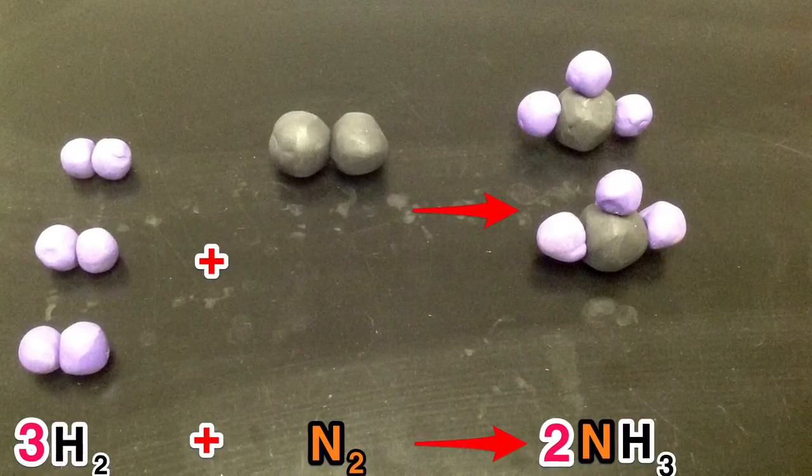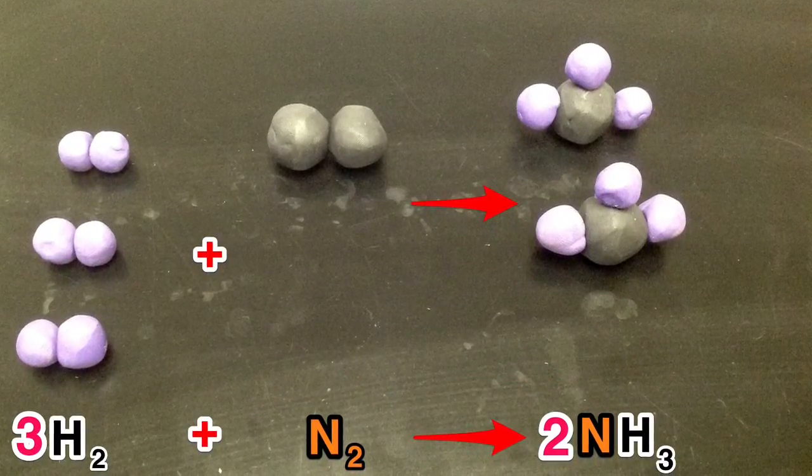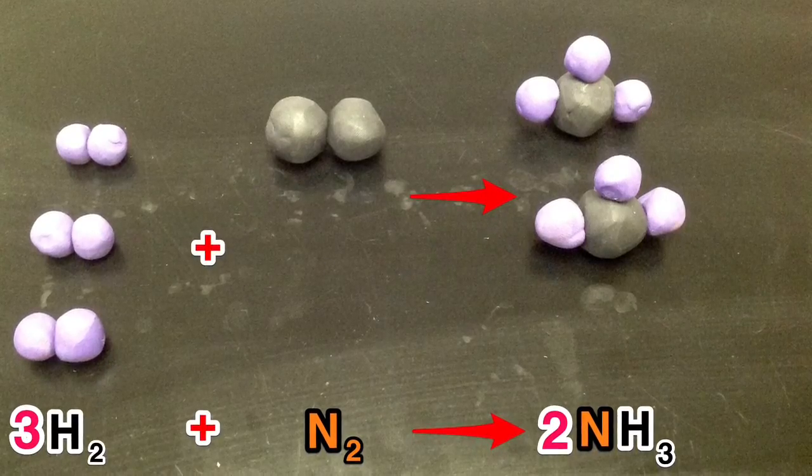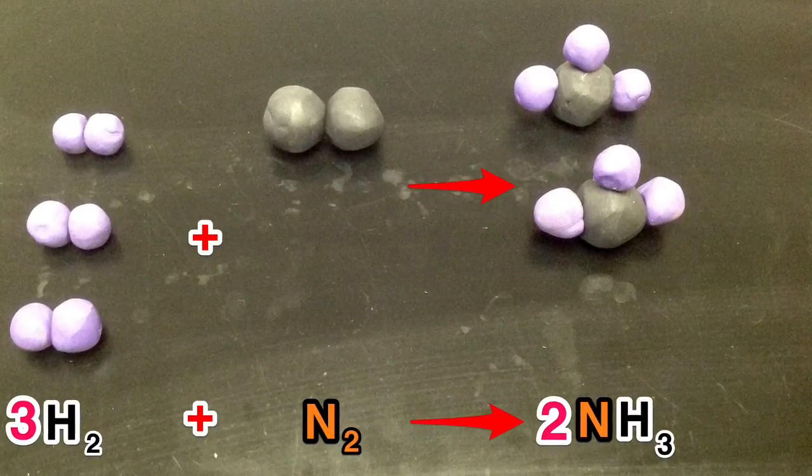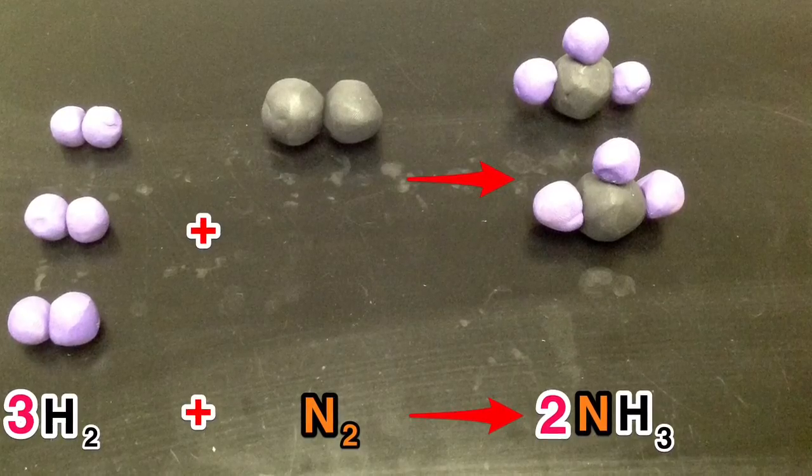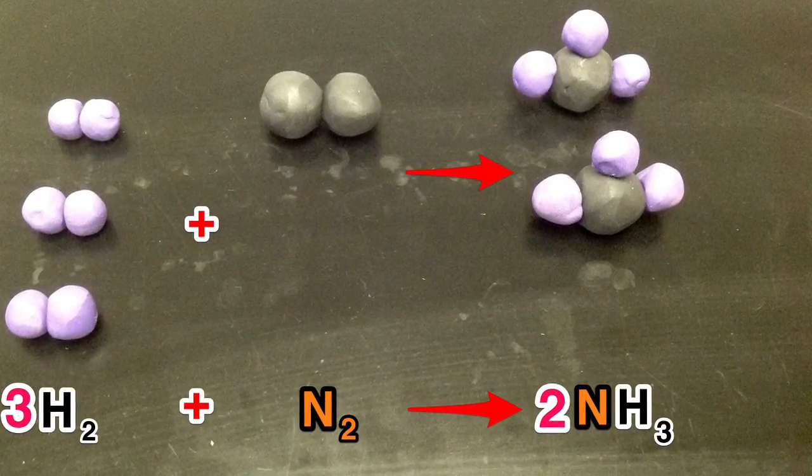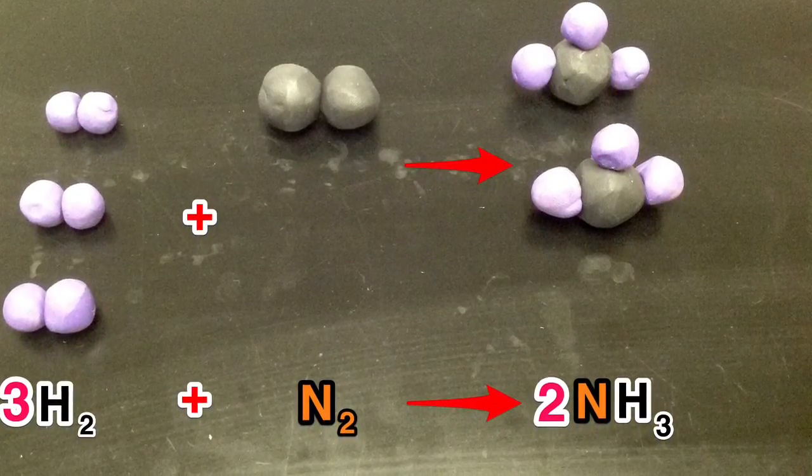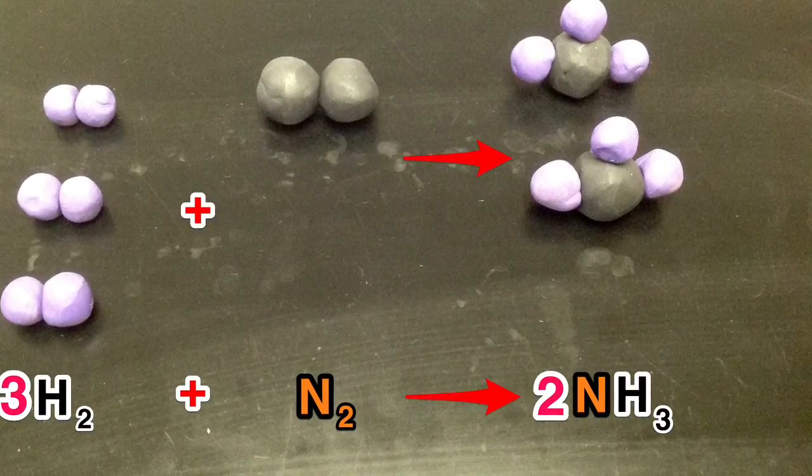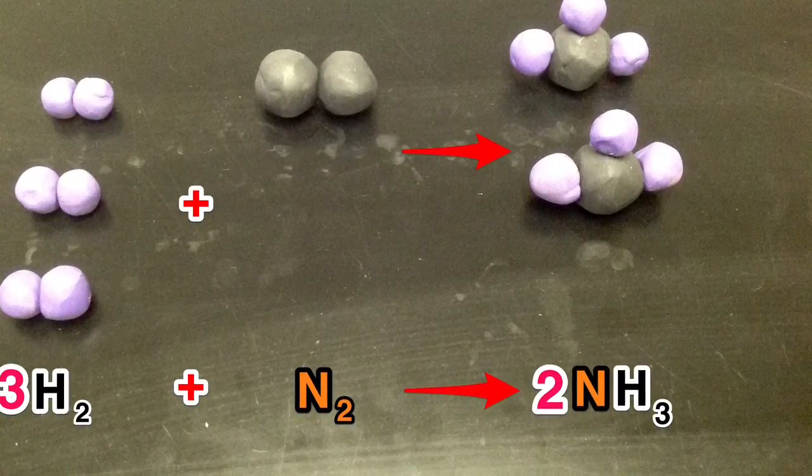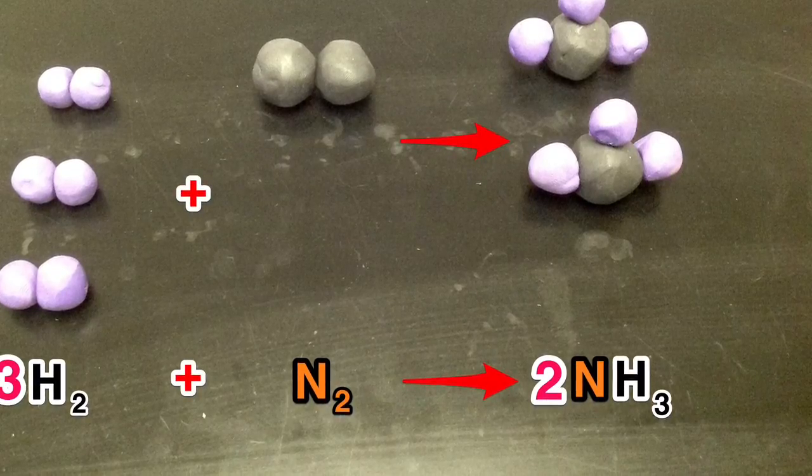To check to see if it's balanced, we do an atom count of the atoms involved in the equation. We see that we have six hydrogen on the left, the reactant side, and six hydrogen on the right, the product side. We have two nitrogen on the left, and two nitrogen on the right. We now have a balanced chemical equation.